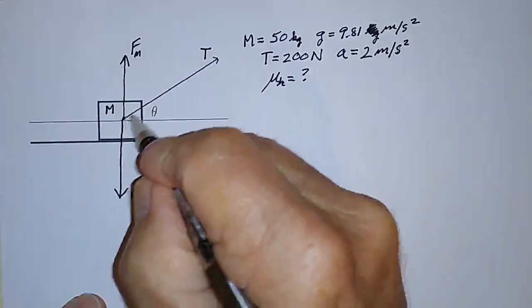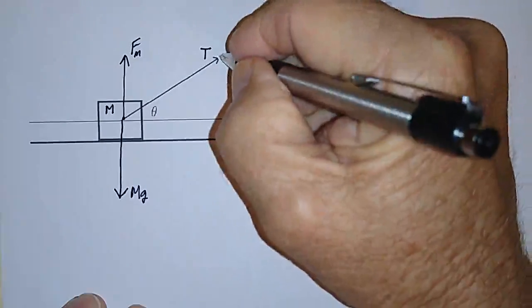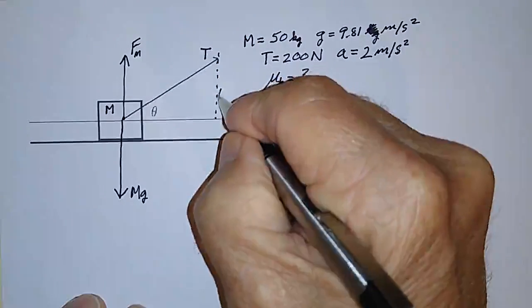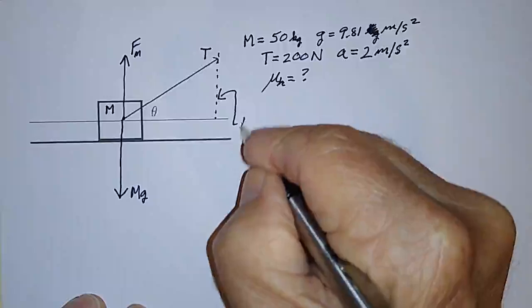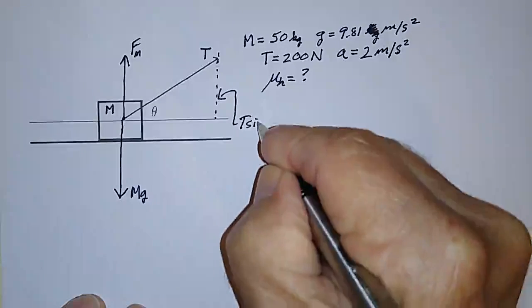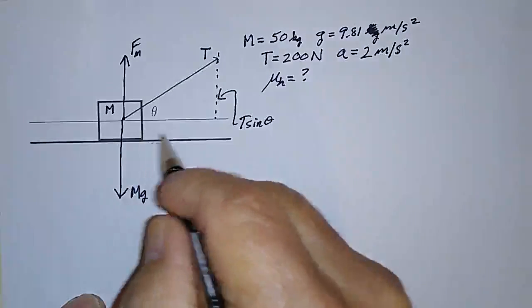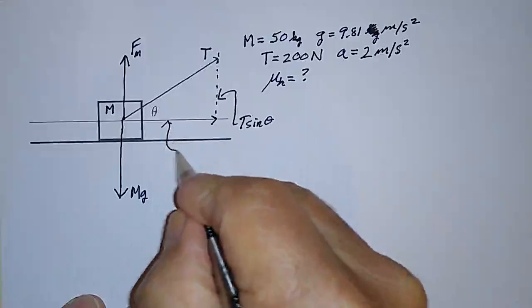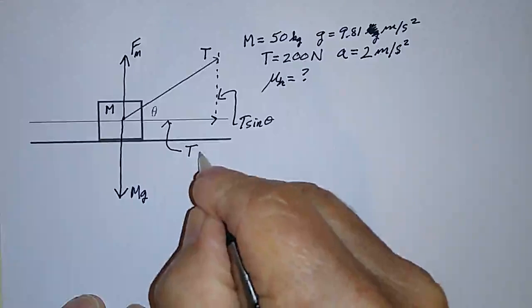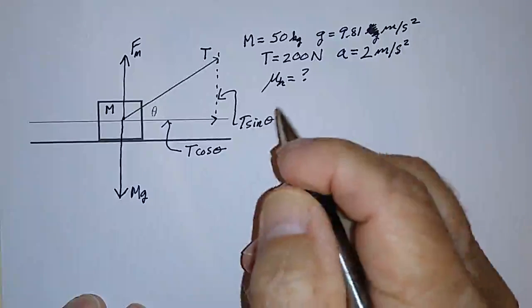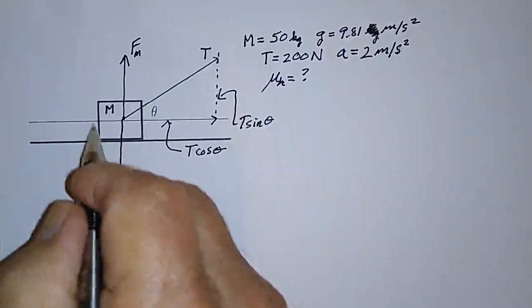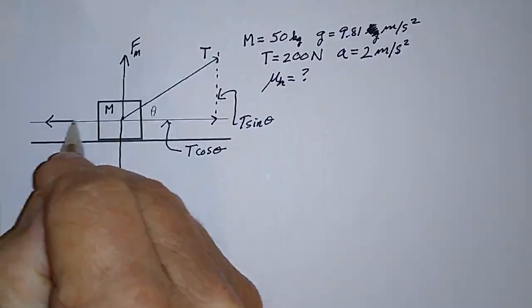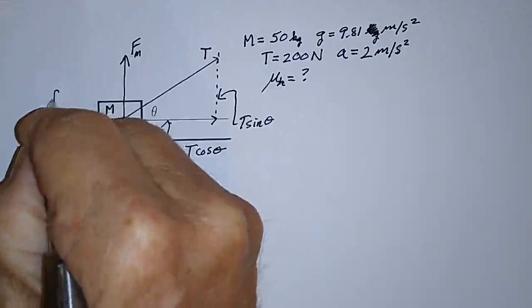This is the tension T, and the vertical component of the tension is equal to T times sine theta, and the horizontal component of the tension is equal to T cosine theta. And then of course there's the frictional force in this direction which I'll call little f.